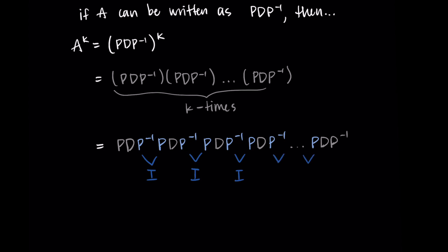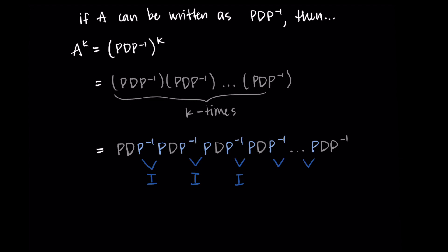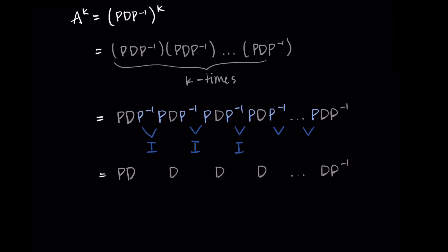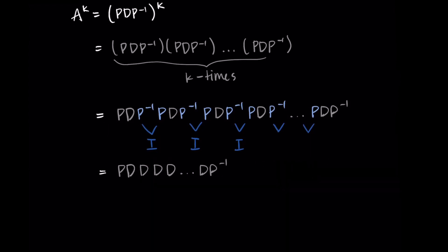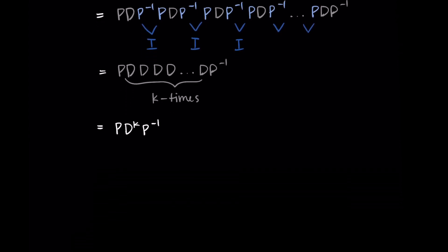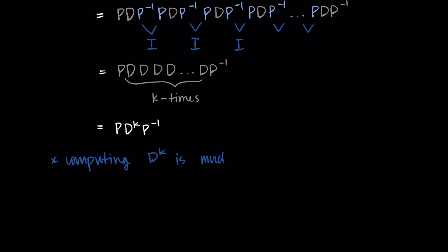Every time we have this P inverse P matching up, this becomes an identity matrix and then it goes away. What we're left with is P's and P inverse on the very outside and then k copies of D on the inside. We can rewrite it as P D to the kth power times P inverse. Computing D to the kth power is much more simple because it's a diagonal matrix.